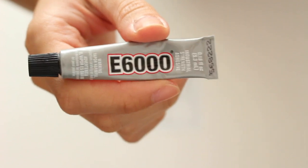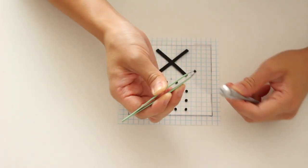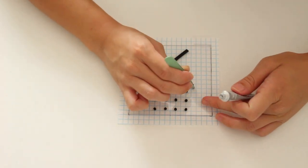I used tweezers to pick up my tiny pieces. Then, I glued my pieces using E6000 and set it aside to dry.